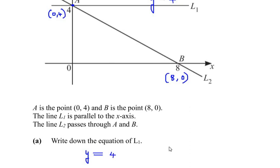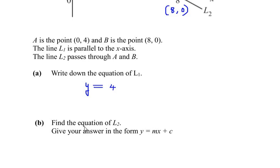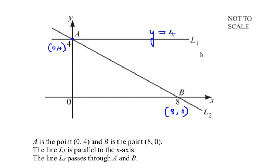Now let us look at part B of this question: find the equation of line L2 and give your answer in the standard form y=mx+c. Here m represents the slope or gradient of the straight line and c represents the y-intercept. Let us understand what the slope and y-intercept are for line L2.